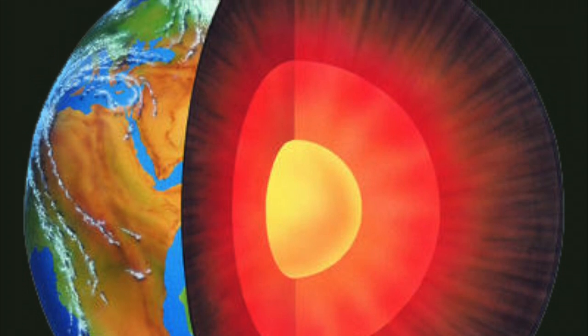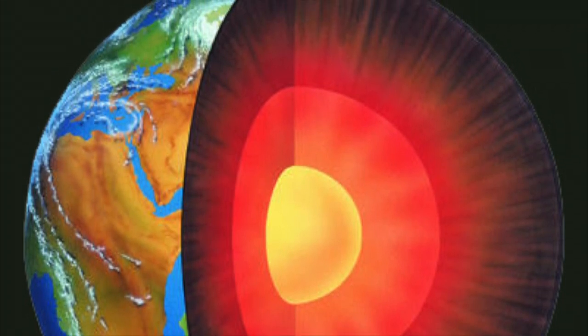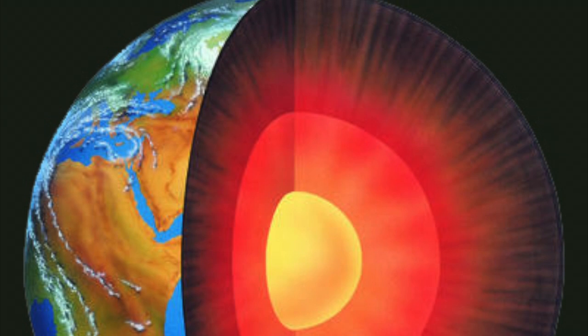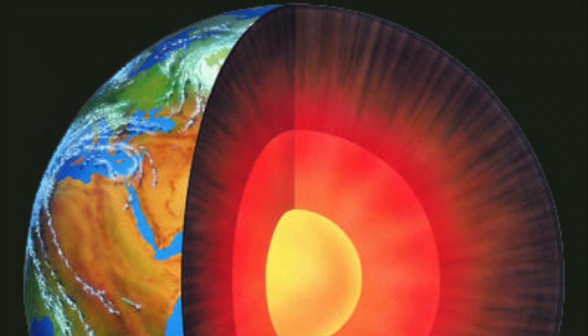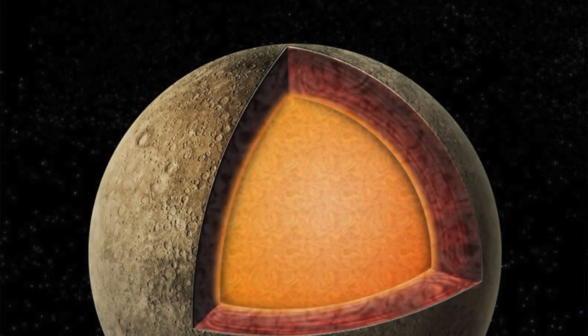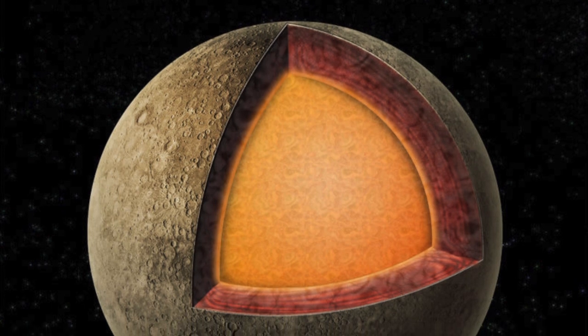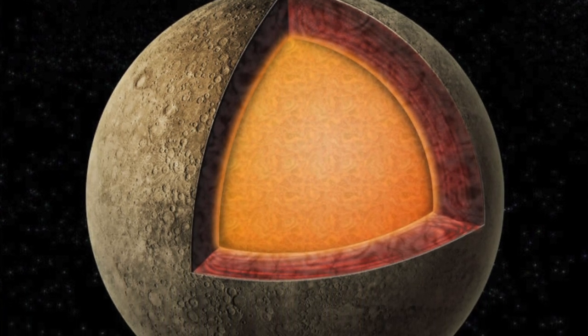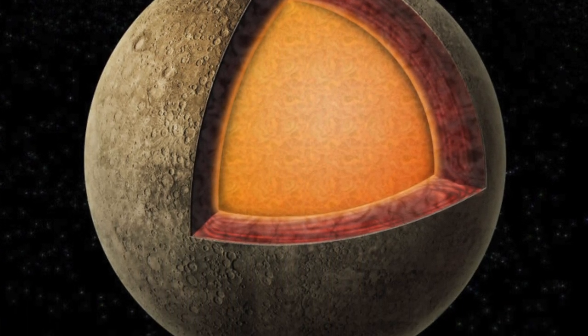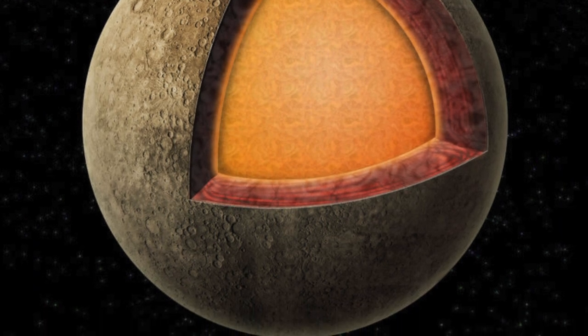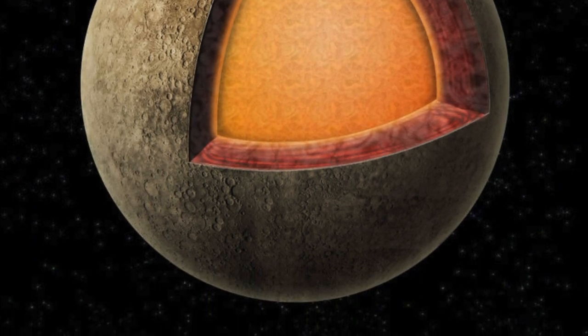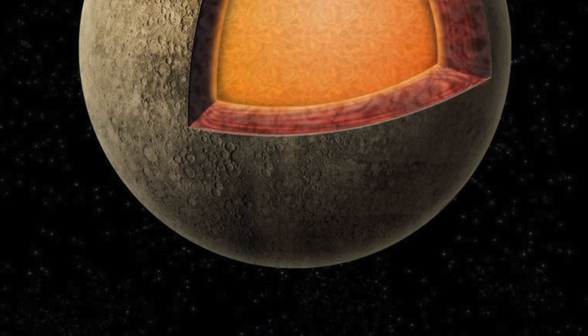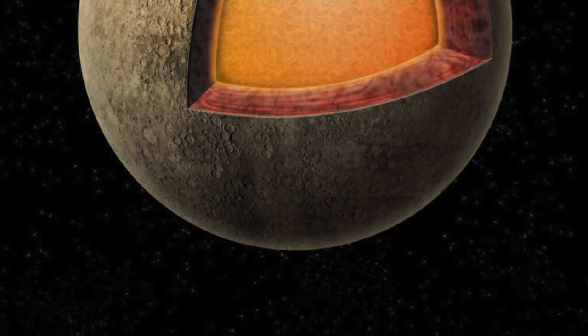After the core is the mantle, which surrounds the core. Like Earth's mantle, Mercury's mantle consists of silicate rock. The mantle isn't as large as the core, as it's only 500-700km thick. Compare this to Earth's mantle, which takes up most of the volume of the planet. Surrounding Mercury's mantle is its crust, an area of the planet that measures 100-300km thick.